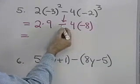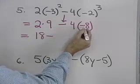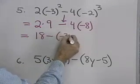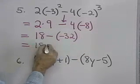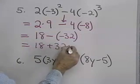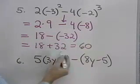Now, I have multiplication here and here. I'll multiply before I subtract. 2 times 9 is 18. Subtract 4 times negative 8, negative 32. Now, that's 18 plus 32, which will be what? 60? 50.